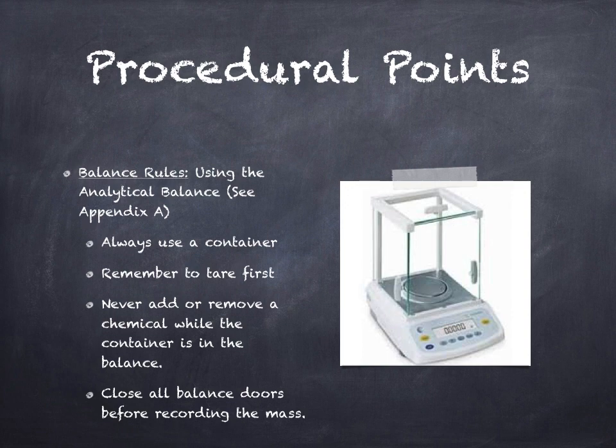The first rule is to always use a container when measuring a chemical substance. This is obvious for liquids but maybe not for solids. For this lab, place water in a beaker or graduated cylinder when weighing. For solids, use a weigh boat—a small plastic container for mass measurements.